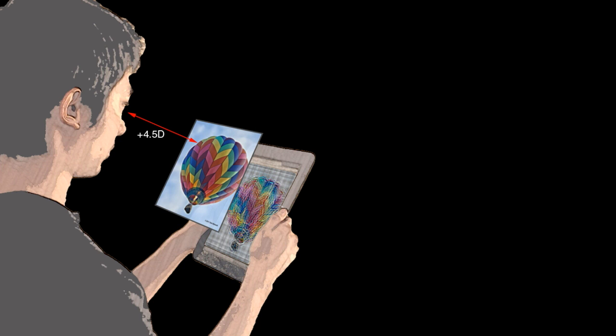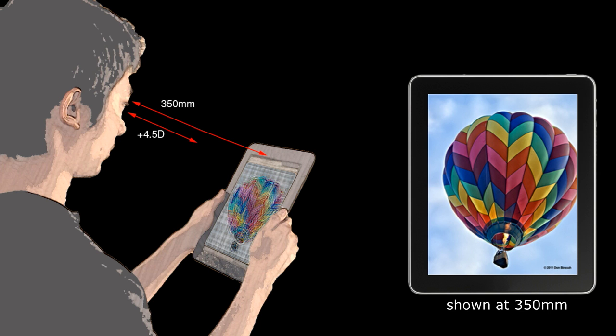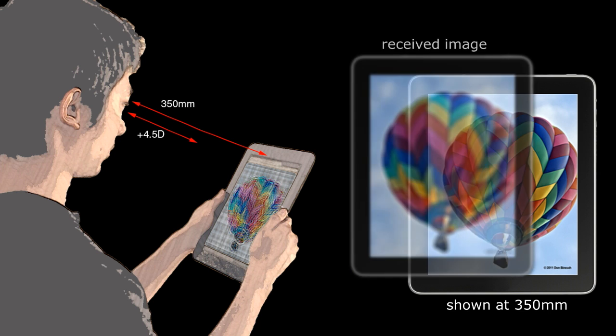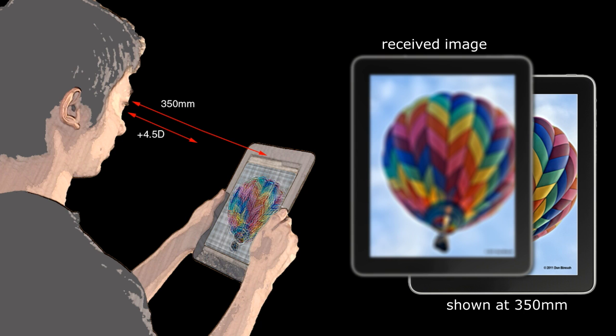Myopic vision has a focal range shorter than the display distance and this results in the user seeing blurred images.